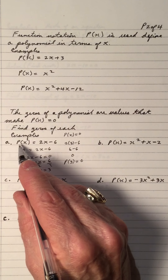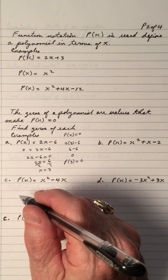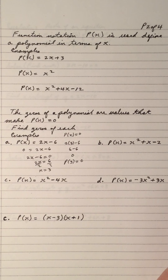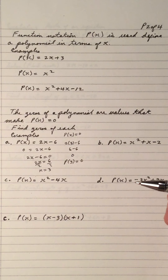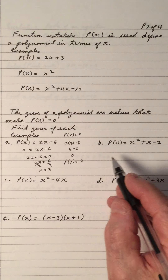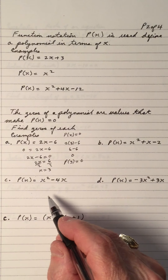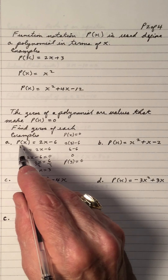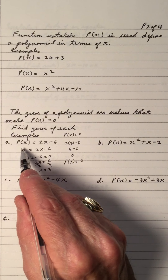So P of X is a form of function notation. It's something that comes up when we do the unit on polynomial functions related to cubics, quartics, quintics — degrees of 3, 4, 5, etc. That's why I'm introducing it as P of X, which is function notation, but the P is for polynomials.